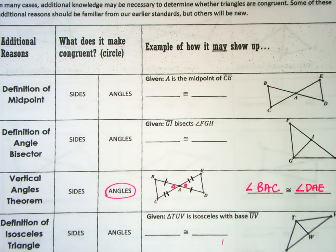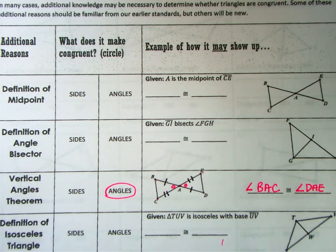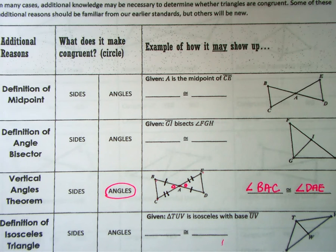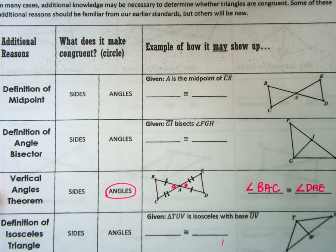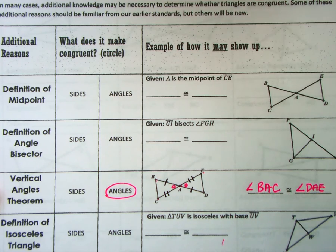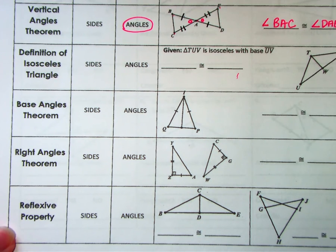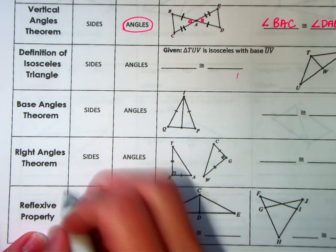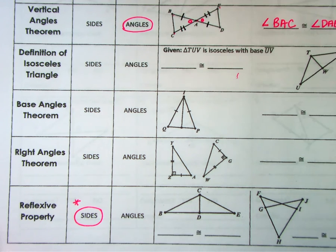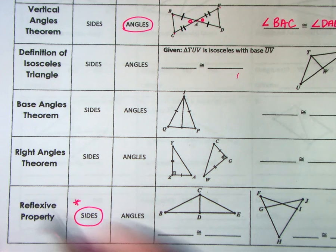That's a pair of vertical angles. There are more options on this page, but the two we're focusing on today are vertical angles and reflexive property, which will allow you to complete the first page of tonight's homework. The reflexive property most of the time is going to give you a pair of sides congruent. Taking it back to algebra one: the reflexive property of congruence says A is congruent to A — A is the same as A.